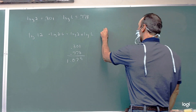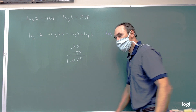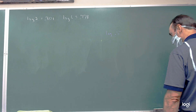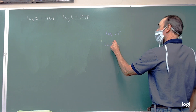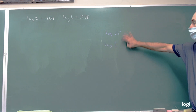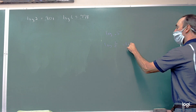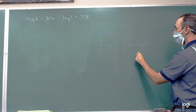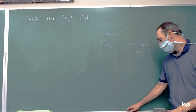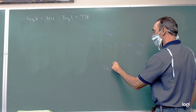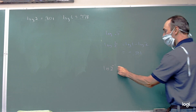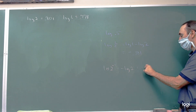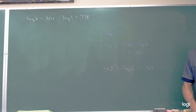Now let's do the log of 0.5. We want to think of that as 1/2. We can call that the log of 1 minus the log of 2. The log of 1 is 0, and we're told the log of 2 is 0.301, giving negative 0.301. Another way: think of this as log of 2 to the negative 1, then use our property of logarithms to get the negative of log of 2, which also gives negative 0.301.